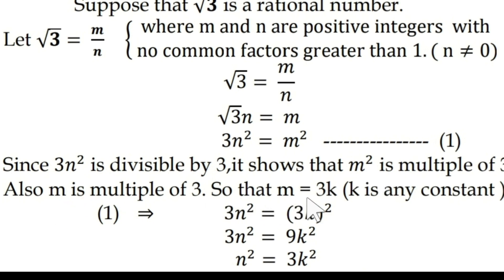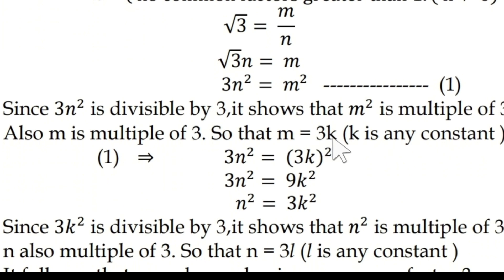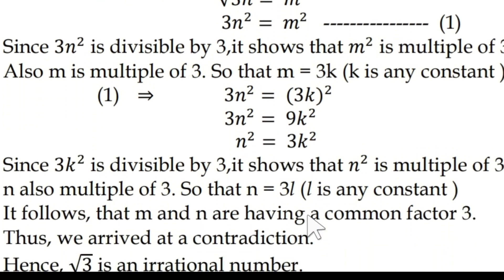So m can be expressed as a multiple of 3 — that is, m = 3k for some integer k. Now substitute m = 3k into the first equation: 3n² = (3k)² = 9k². After simplifying, we get n² = 3k².